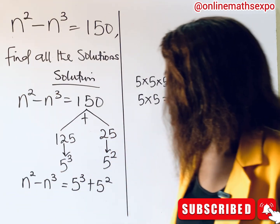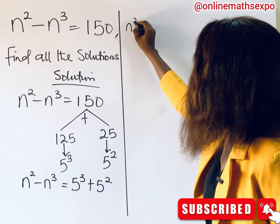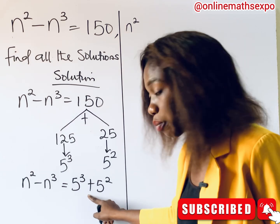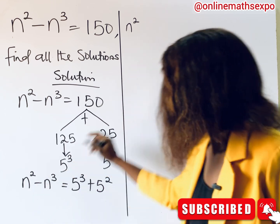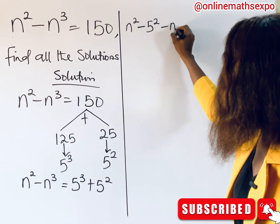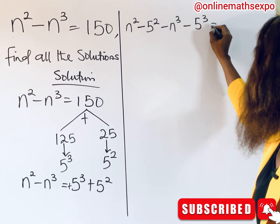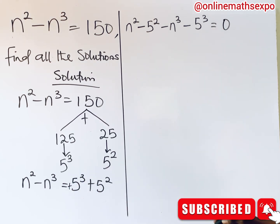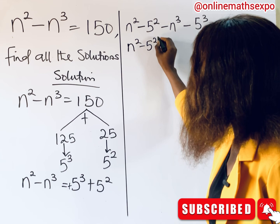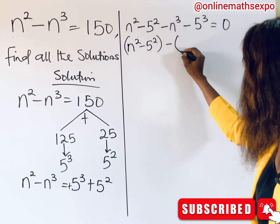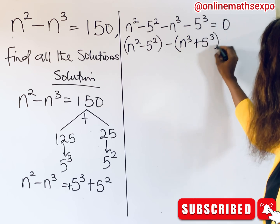Now collect terms of the same powers together. We have n squared and 5 squared, so subtract 5 squared from both sides. That gives us negative 5 squared on the right. Then we have negative n cubed; subtract 5 cubed as well, giving negative 5 cubed. The whole right-hand side becomes zero. Now group them in pairs: n squared minus 5 squared, and factor out a negative sign from the cubic terms, giving n cubed minus 5 cubed, all equal to zero.